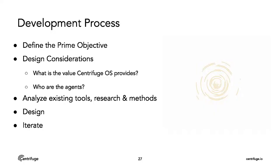So, how did we do that? Our development process is really defining the prime objective first. Then, what are our design considerations? What is the real value that we're providing for our users? Who are the agents that are actually using this? And then from there, looking at the stack that we have — what are all the tools available to us to actually achieve the prime objective?